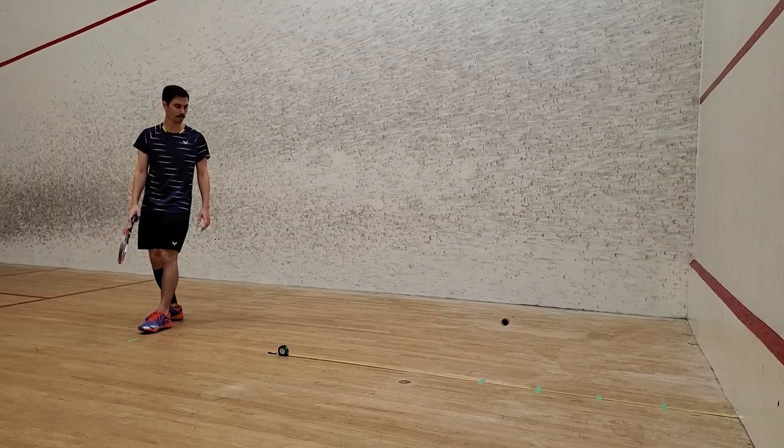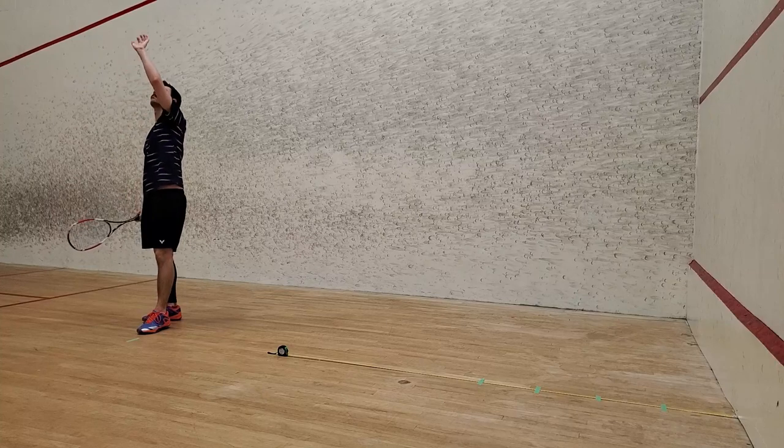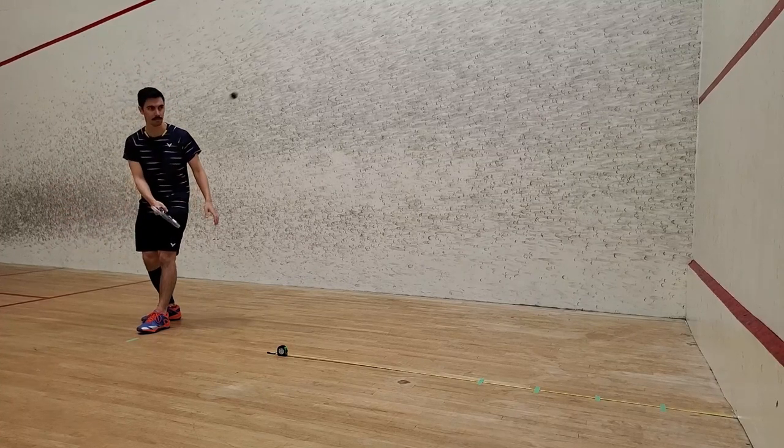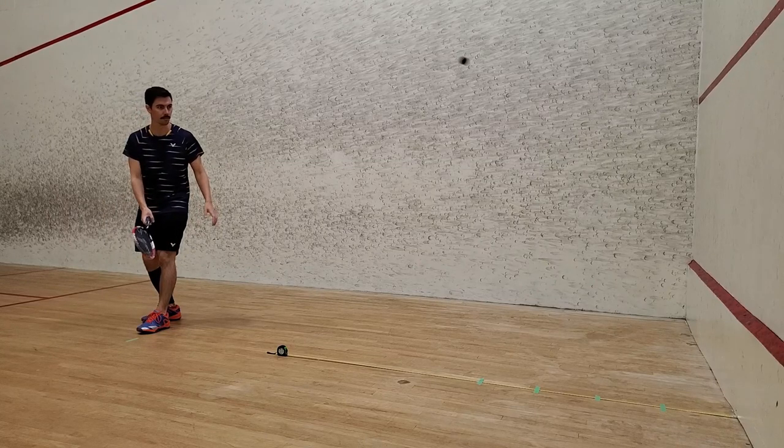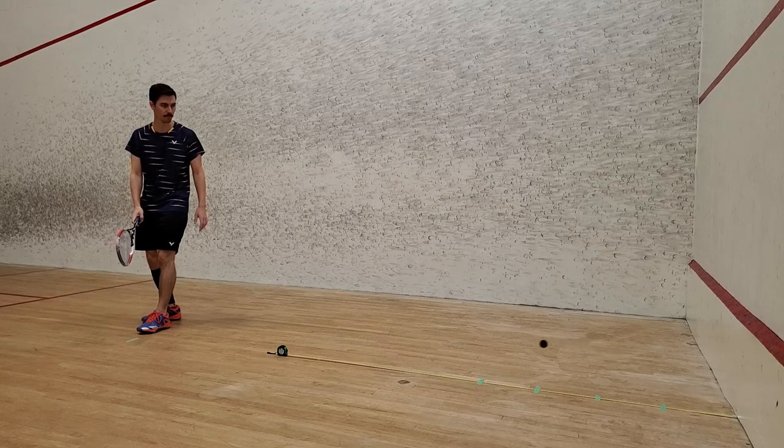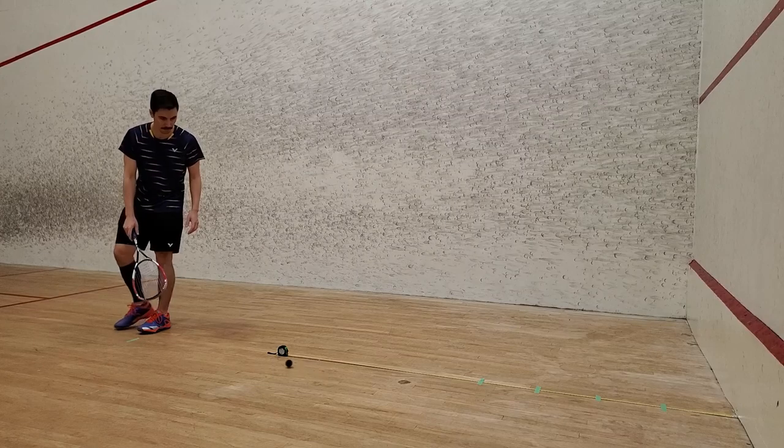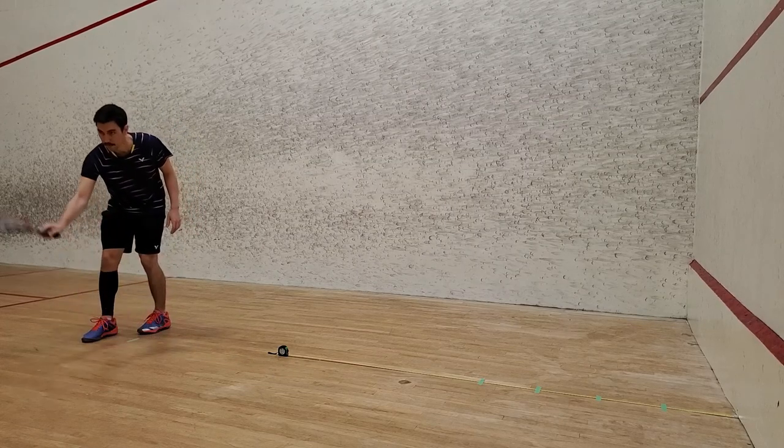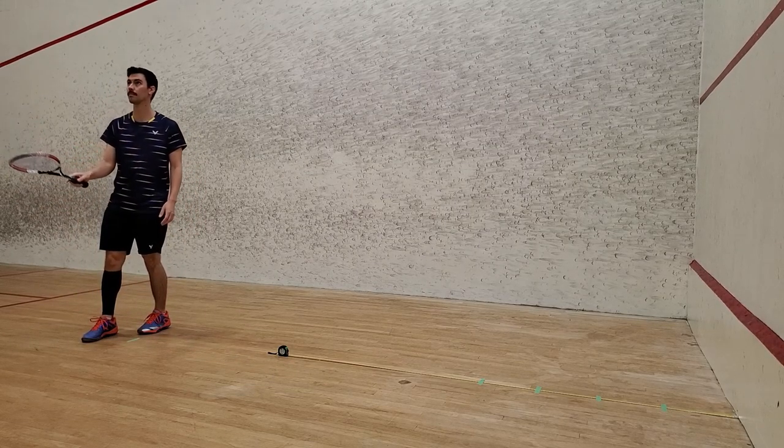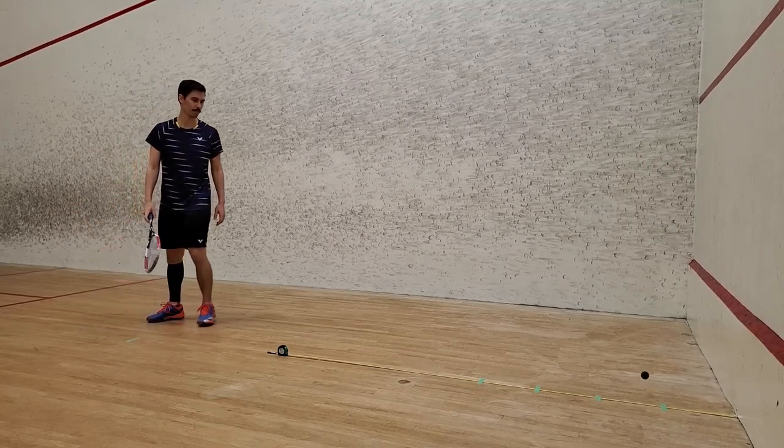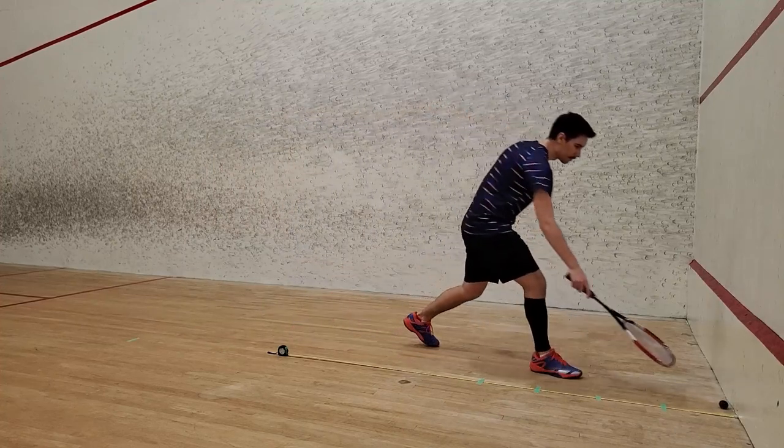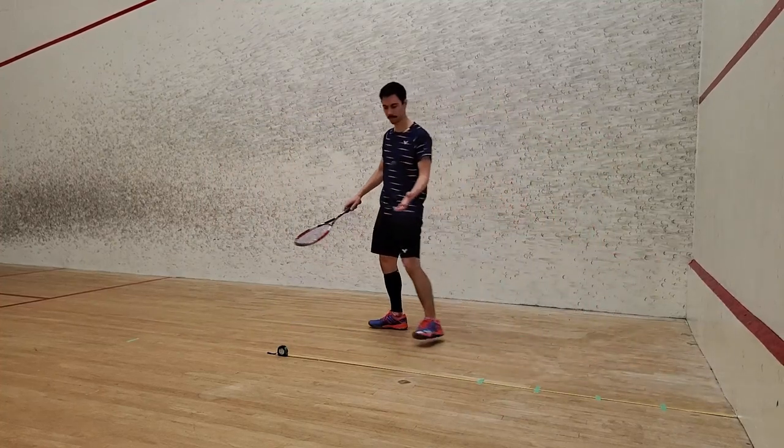Now last but not least, I wanted to see how close I could get the ball to land to the front wall. To do this, I simply hit lobs. Doing so, I was able to get the ball to land within 10 inches of the front wall. However, this is even harder to do than the topspin shot. And your opponent will have lots of time to retrieve the ball before it even hits the front wall. So, not really a good idea in actual gameplay.